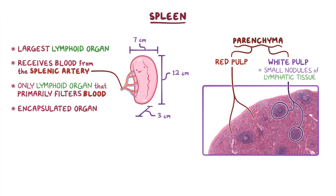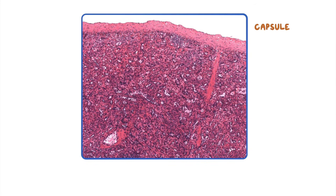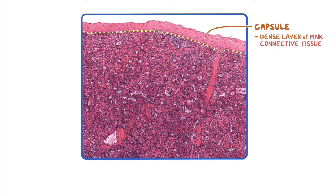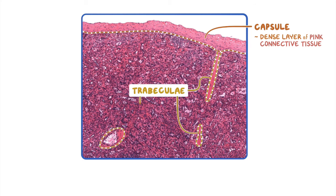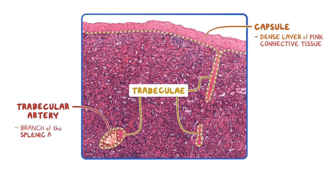If we take a closer look at the outer edge of the spleen, the capsule that surrounds the spleen is seen as a dense layer of pink connective tissue. The connective tissue also forms short extensions into the spleen called trabeculi. The trabeculi will also occasionally surround arteries as they enter the parenchyma of the spleen. These trabecular arteries are branches of the splenic artery.